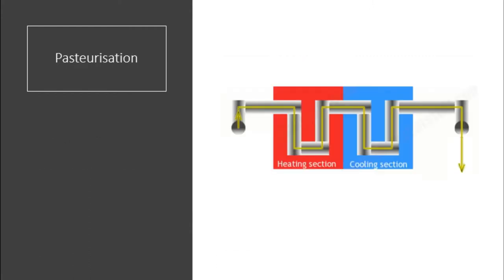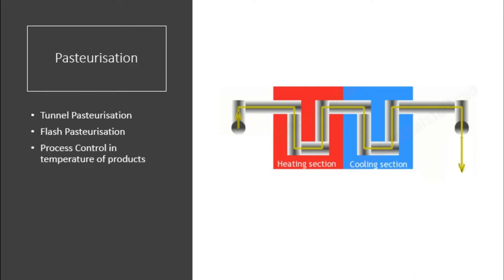Now, we will introduce pasteurization. It is a modified heat exchanger that is commonly used in the beverage industry. There are two types of pasteurization: tunnel pasteurization and flash pasteurization. It is mainly used for temperature control in manufacturing — used to cool down or heat up the solution.